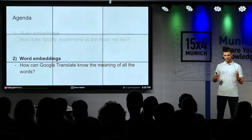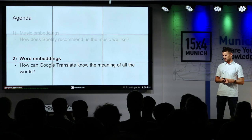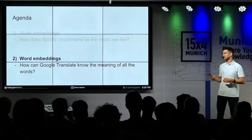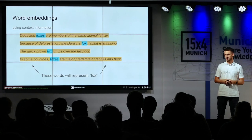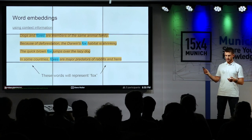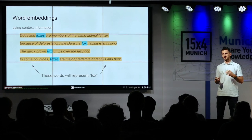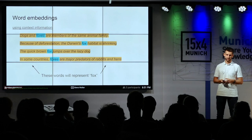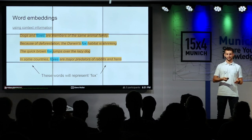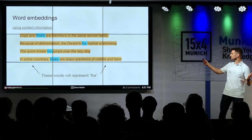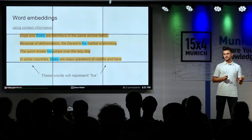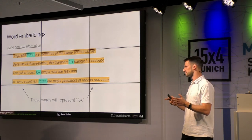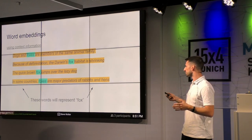That's enough for music. Let's switch to the second part of our talk: word embeddings. We're going to briefly look at one approach for creating a numerical representation of words. The main idea is to use context information. Imagine you have the word 'fox' and you want to create a representation for it. Here are several sentences about fox — grabbed from Wikipedia — and you observe different words around fox: dogs, animal, habitat, brown, predators, and so on. Each of these words contains a tiny piece of information about the word fox, because they occur close to it, they occur together.